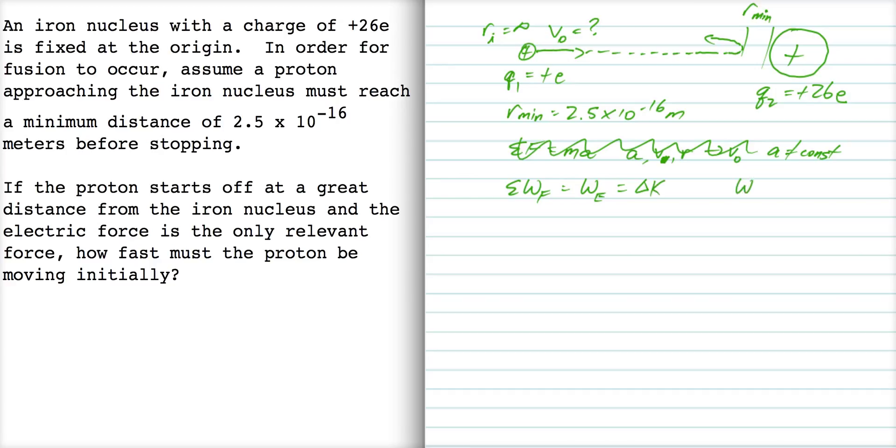The work done by the electric force, we have a couple of different ways to find that. One way is f delta s cosine theta, but that doesn't work here because we don't have a uniform field. The field varies. As you get further and further away from q2, the field gets weaker and weaker. So you can't use the work equals f delta s. You instead have to use minus delta UE.